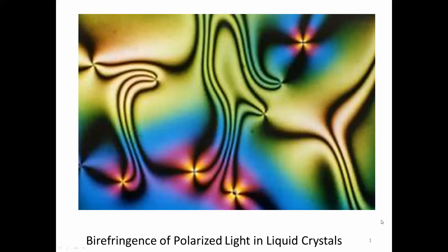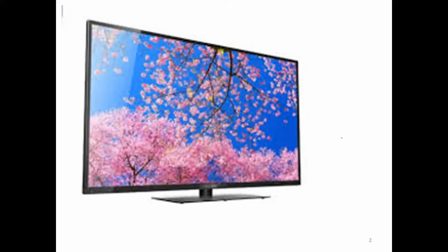Liquid crystals are particularly important because they interact with light in interesting and important ways. Specifically, they can change the polarization of light. This is basically an image of shining polarized light through a film of liquid crystals. You can see at some parts the light is rotated and slowed, and at some parts the light is canceled out because it's rotated at an angle that's canceled out by the polarizer between the film and where we're looking at it.